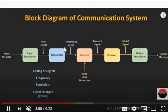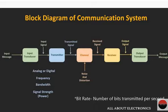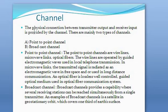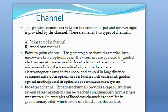After the transmitter, the transmitted signal is given to the channel. The channel is a physical connection between the transmitter output and the receiver input. There are mainly two types of channels: point-to-point channel and broadcast channel. Point-to-point channels include wire lines, microwave links, and optical fibers, used in local telephone transmission. A broadcast channel provides capability where several receiving stations can be reached simultaneously from a single transmitter.